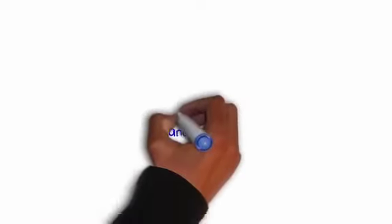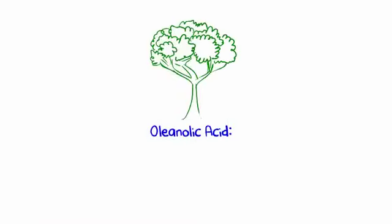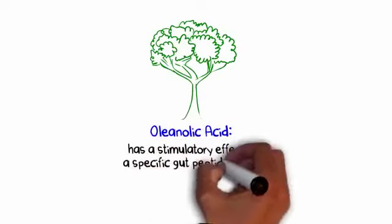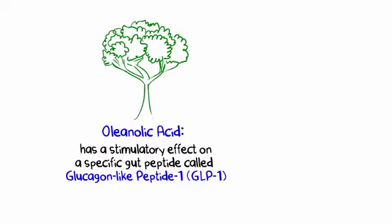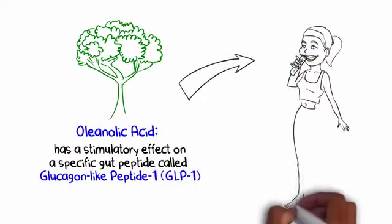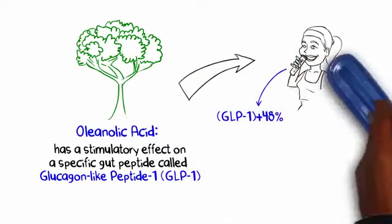Next up is oleanolic acid, a compound extracted from olive tree leaves that has a stimulatory effect on a specific gut peptide called glucagon-like peptide 1, or GLP-1. Research shows that an oral dose of this extract can increase GLP-1 by 48%, which in turn has been closely linked to increased leptin production.